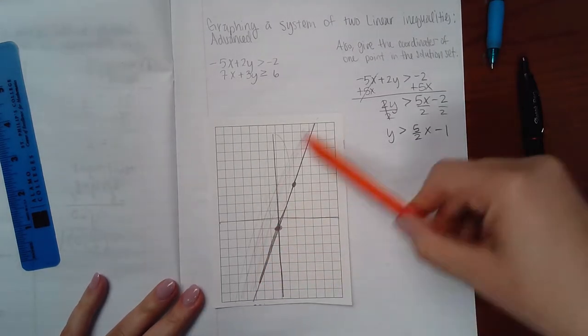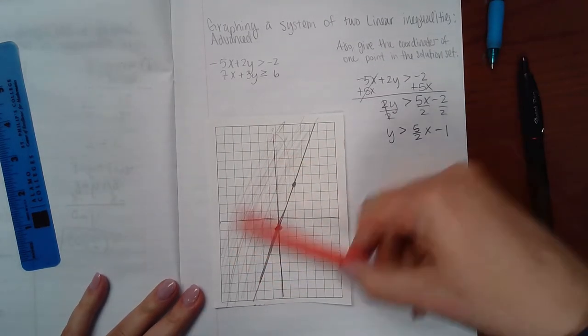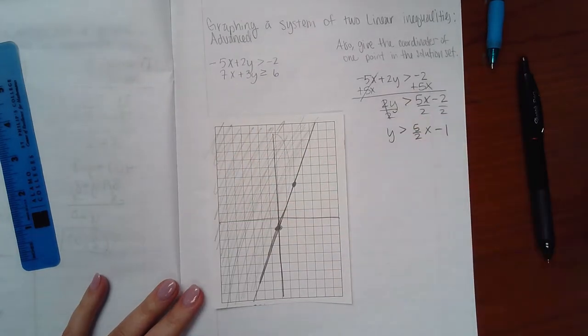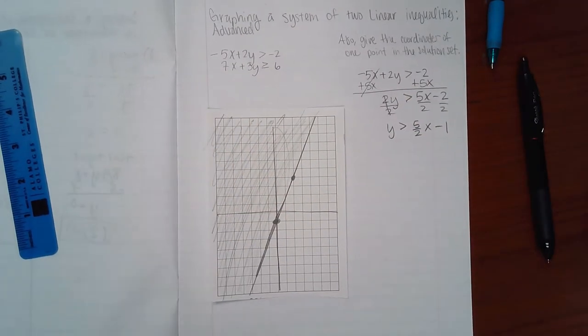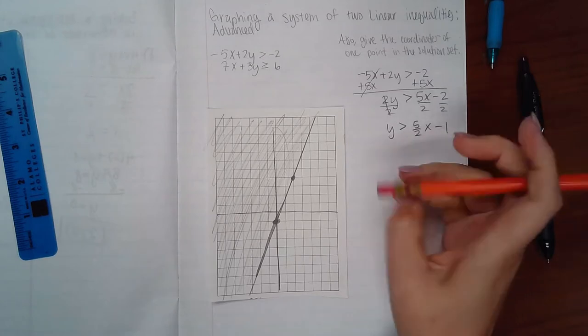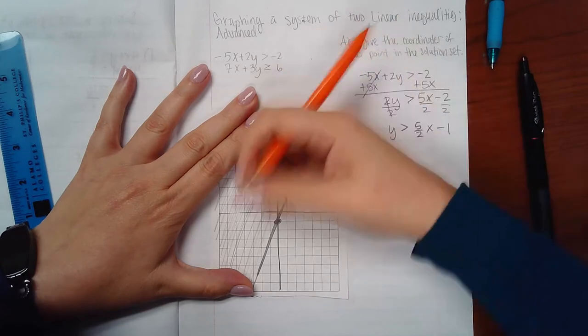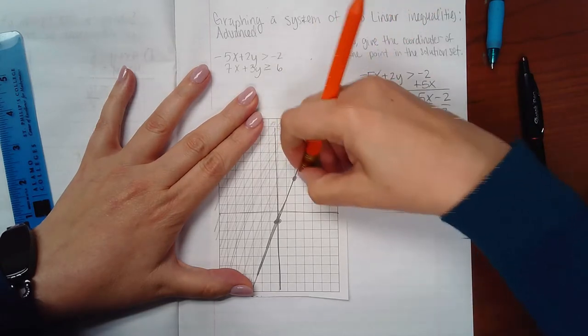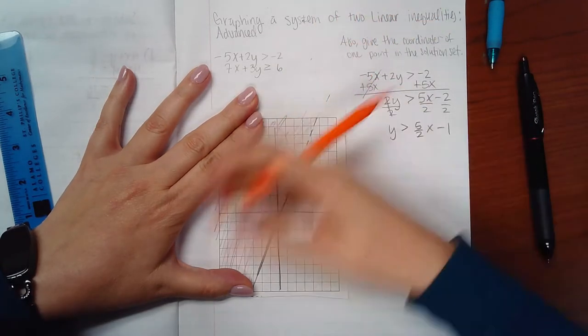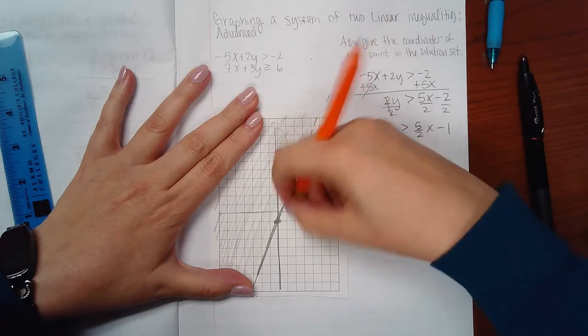Because this does not have a bar in it, my line should actually be a dotted line. So bear with me while I try to make this a dotted line. In ALEKS it's easy—right click the button and make it a dotted line.